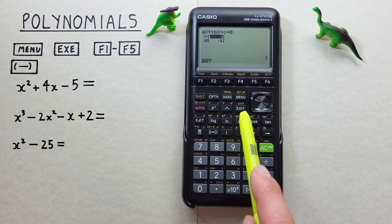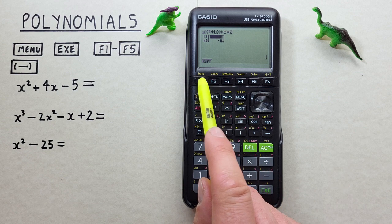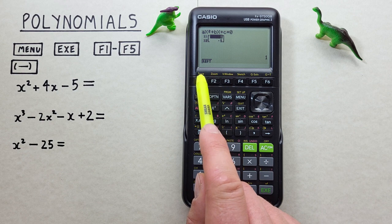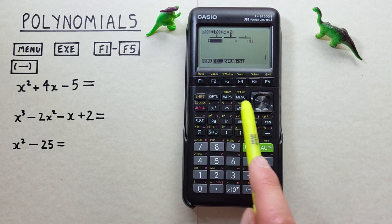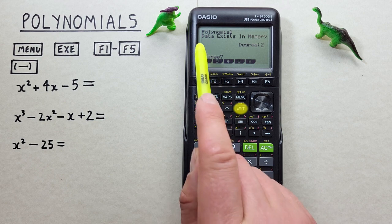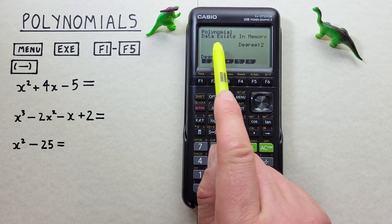To go back we can either hit exit or repeat. So here if we hit F1 repeat that takes us back to this screen, and if we want to go back one more we hit exit again and we're back at our screen where we choose our degrees.